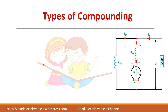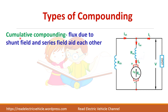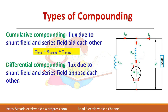In the compound generator, there are two types of compounding based on how the fluxes from the two windings interact — whether they aid each other or oppose each other. If the flux due to the shunt field and series field are aiding each other, we call it cumulative compounding. If both fluxes oppose each other, we call it differential compounding.